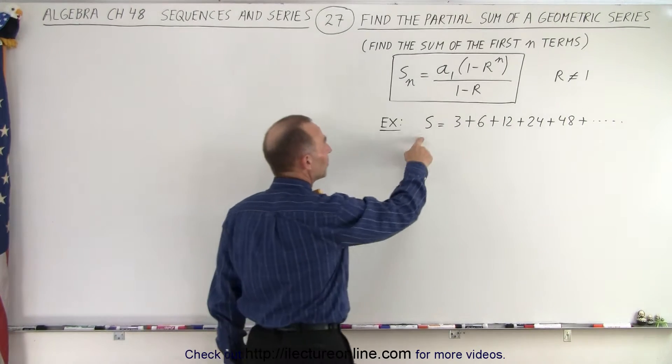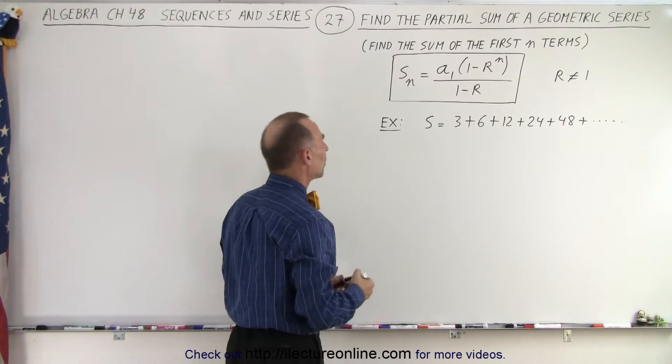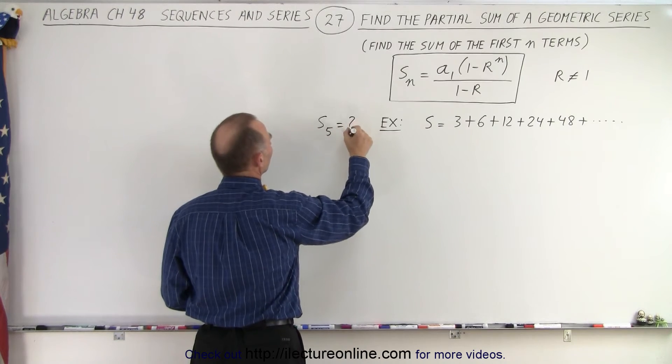Here's an example where the sum equals 3 + 6 + 12 + 24 + 48 and so forth. We want to find what S₅ equals.